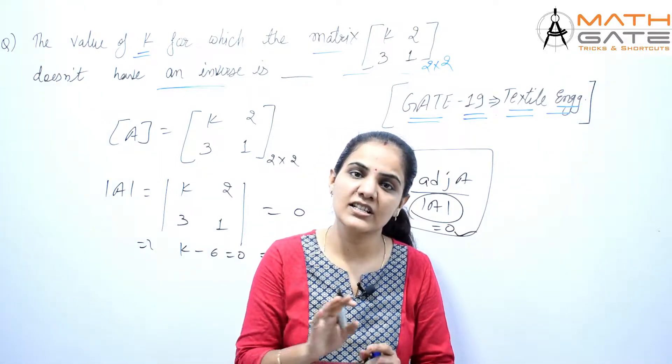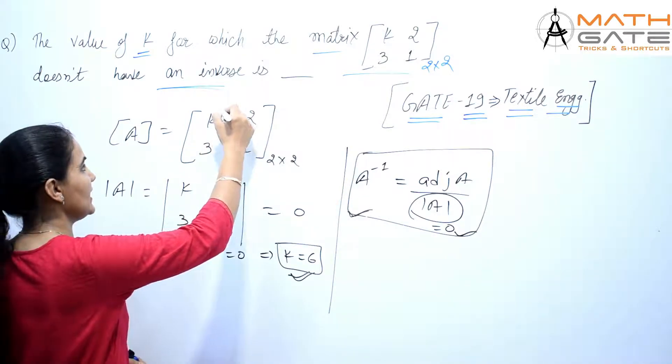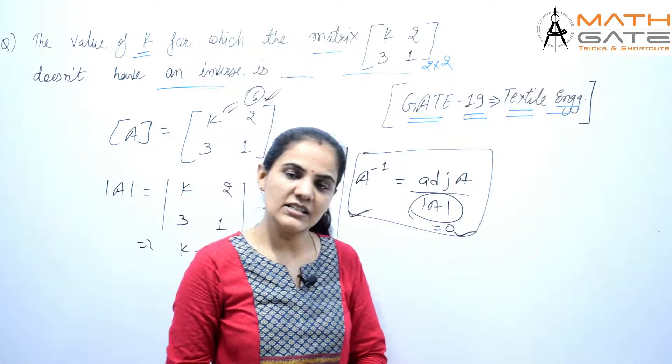We can write k equals 6, which means the matrix's inverse will not exist. The right answer to this question is 6. Thank you, students.